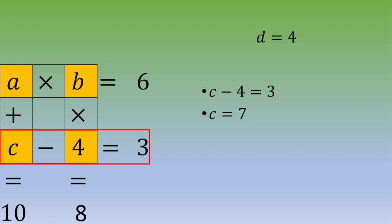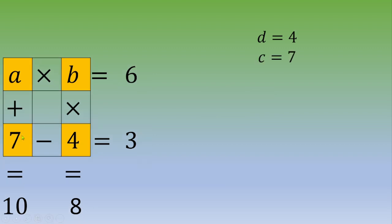You know the value of 7, so you plug in this table. Now, you focus on column number 1. A plus 7 equals 10. You got A equals 3.